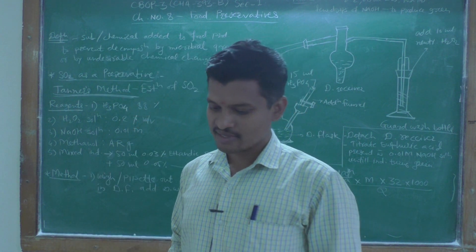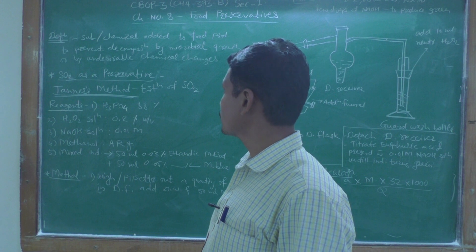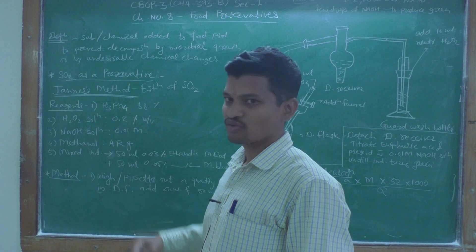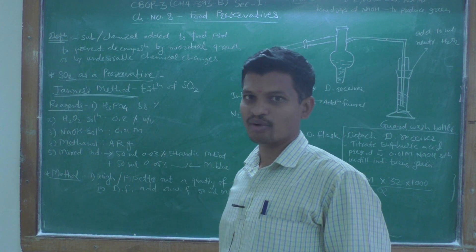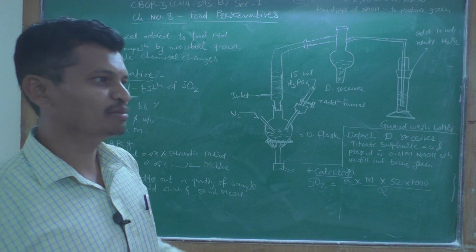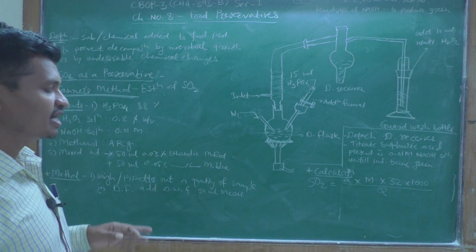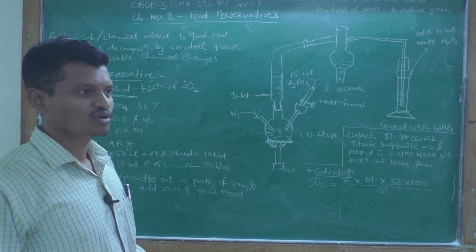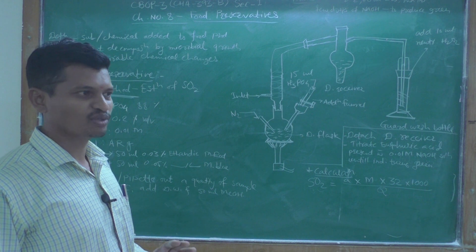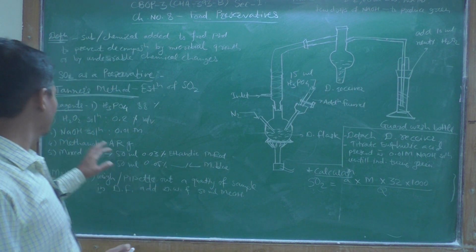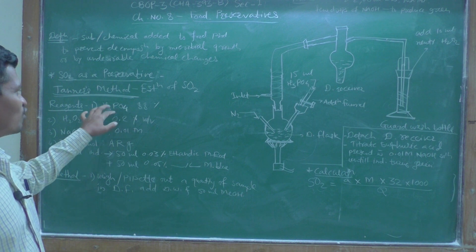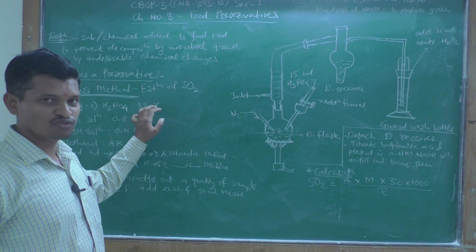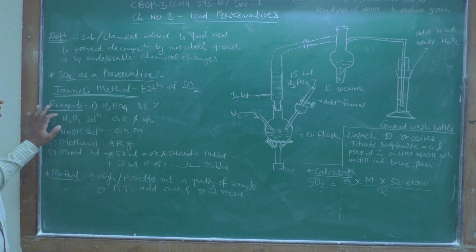Tanner's method is used for the estimation of sulfur dioxide. SO₂ can be estimated with the help of this method. Different methods exist for the estimation of SO₂, but Tanner's method is one of the best methods for this purpose.